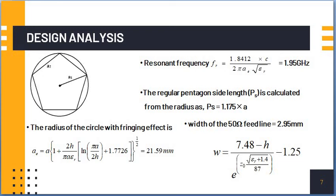The side length of the pentagon patch is calculated with the equation 1.175 times A, where A is the radius of the circle from the center. And the 50 ohm line is designed with the equation W equals 7.48 minus H by E to the power of Z naught under root epsilon R plus 1.4 by 87 minus 1.25. That would be 2.95 mm. In order for the designing of this antenna, I have taken the width of 50 ohm feed line as 3 mm.